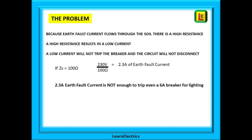So what is the problem with the TT arrangement? It's very easy. Because earth fault current flows through the soil, there is a high resistance. A high resistance results in a low current, and a low current will not trip the breaker and the circuit will not disconnect. You can see from the calculation that if the soil resistance was 100 ohms, then only 2.3 amps of earth fault current will flow, and this is clearly not enough to cause even a 6 amp breaker on a lighting circuit to trip.